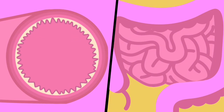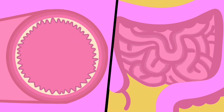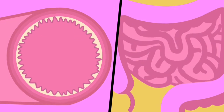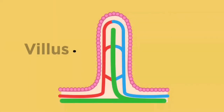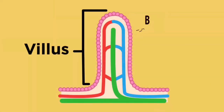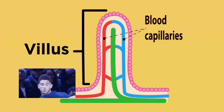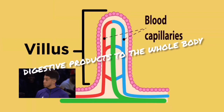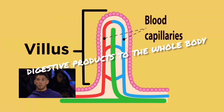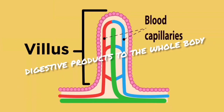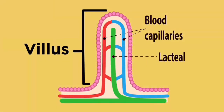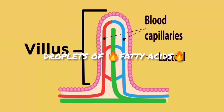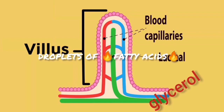Those characteristics are as follows: starting with the blood capillaries, which help to transport digestive products to the whole body. We can't forget the lacteals, which carry droplets of fatty acids and glycerol.